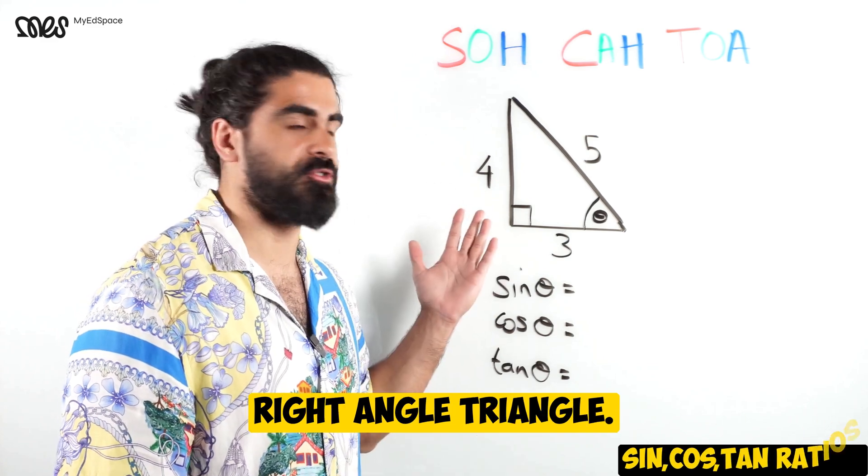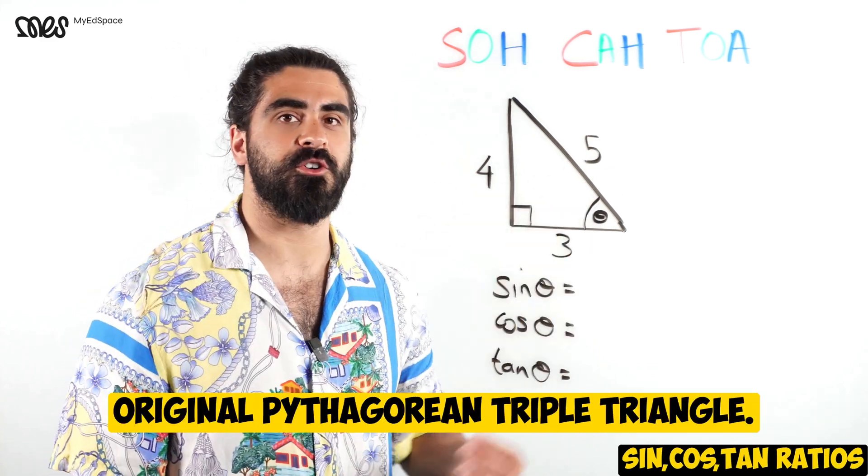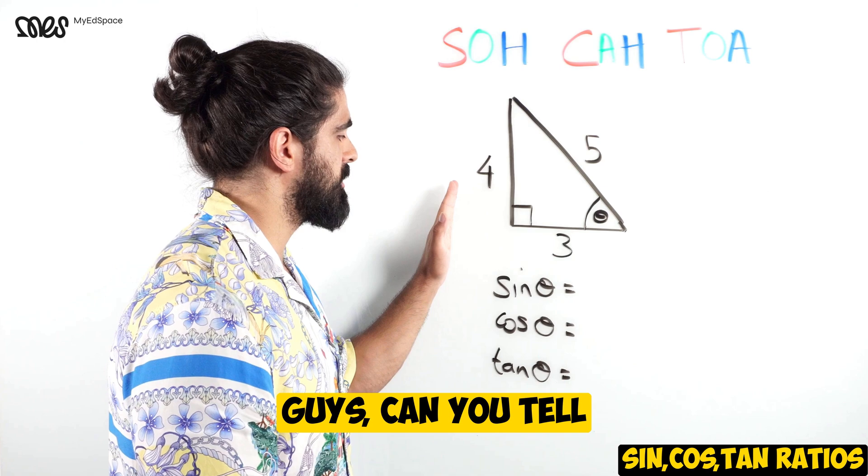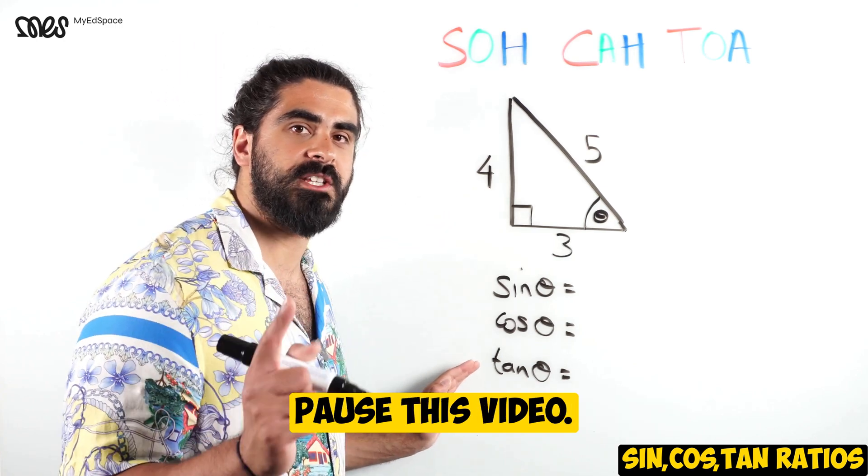Here's an example of a right-angled triangle - the 3-4-5 original Pythagorean triple triangle. With this triangle, can you tell me what sine, cos and tan are? Pause this video.